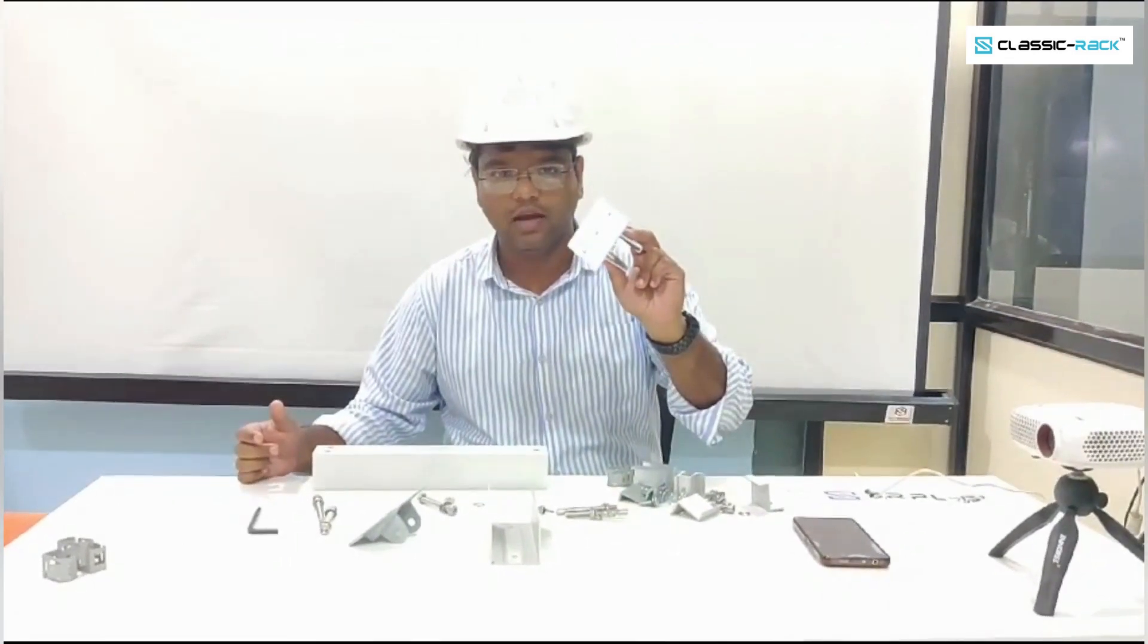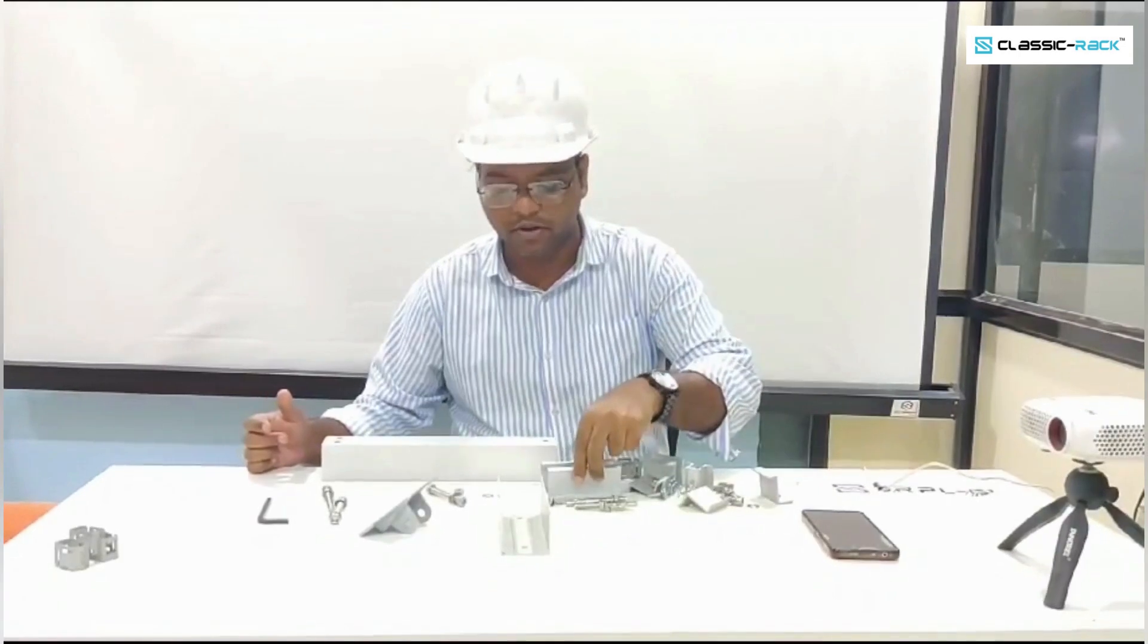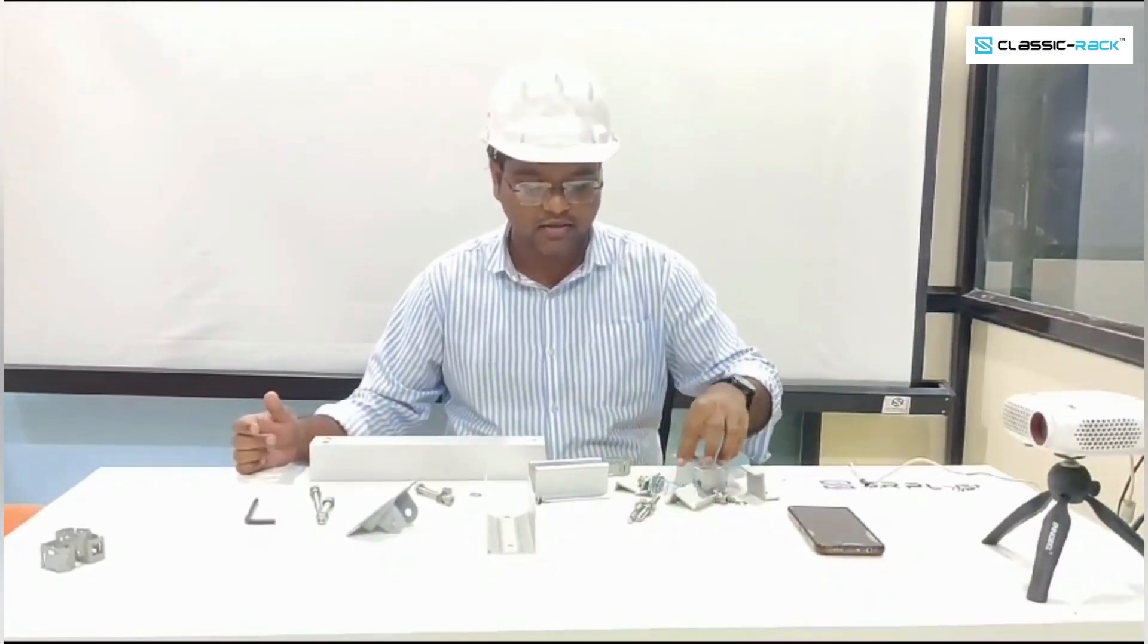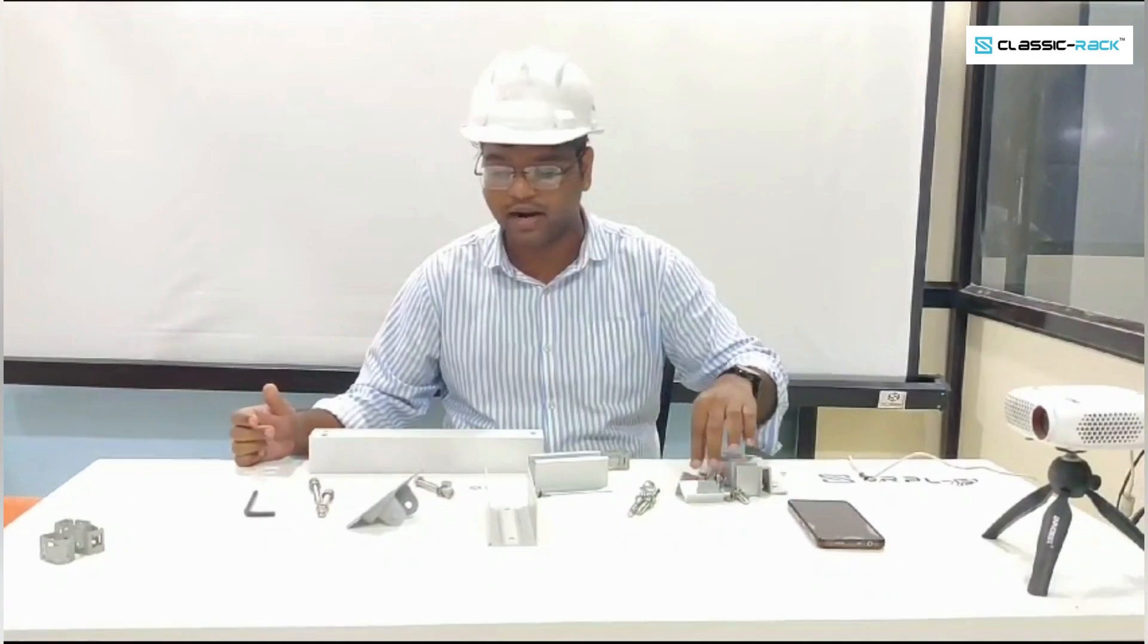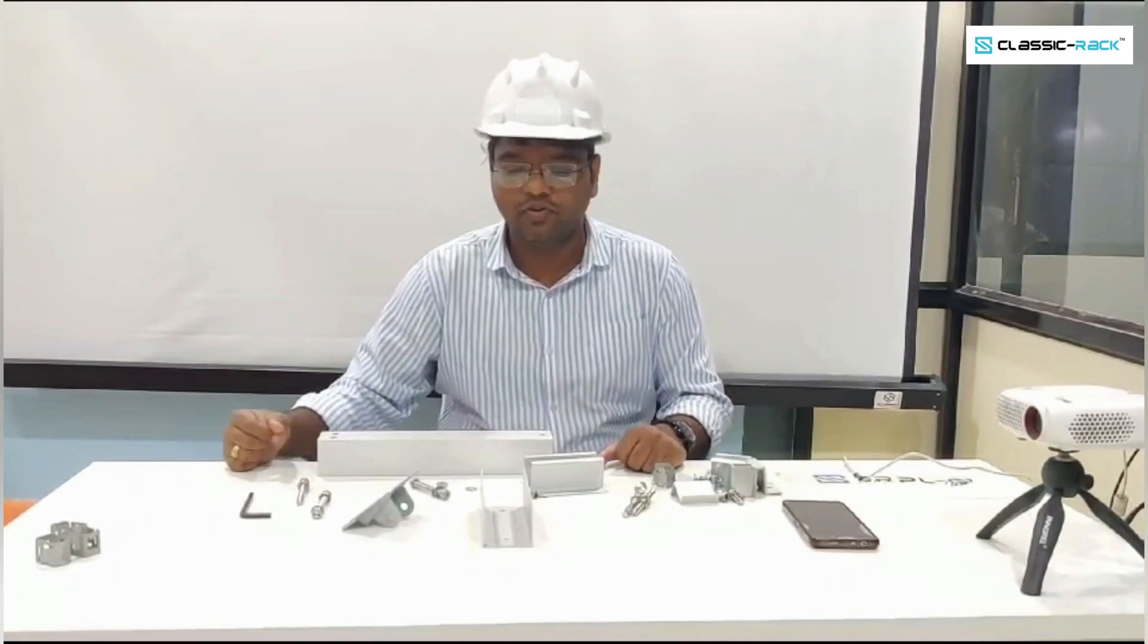This base profile is made up of 6063 material and this is extrusion profile. This is a strut purlin - 41x41 strut purlin which we will be using in this structure. And rest of the things are fasteners like midline clamp for joining all this structure.